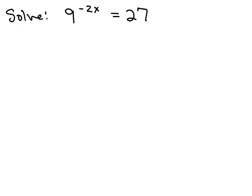Let's try another one. How about this one? We have 9^(-2x) = 27. Note, neither 9 nor 27 are prime. We want to see if we could write that as a power of something and hopefully the base will be the same. Well, 9 is 3^2 and 27 is 3^3. So 3 is going to be the base we want. So we need to rewrite 9 as 3^2. But that's (3^2)^(-2x).